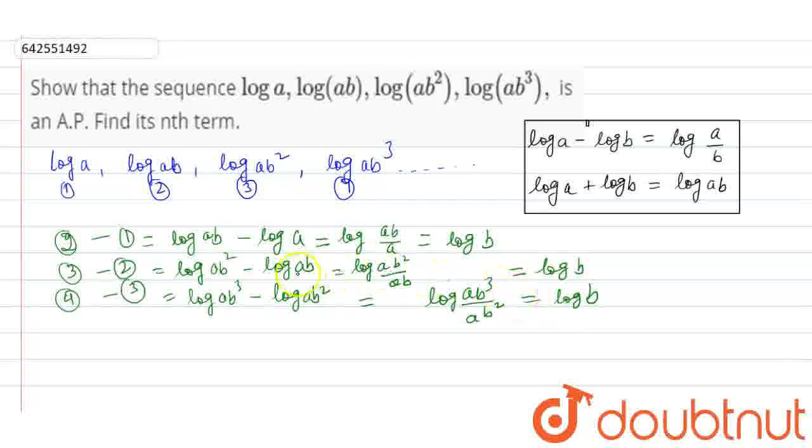So the common difference between these terms is log b, which is constant. Therefore, these terms are in A.P.